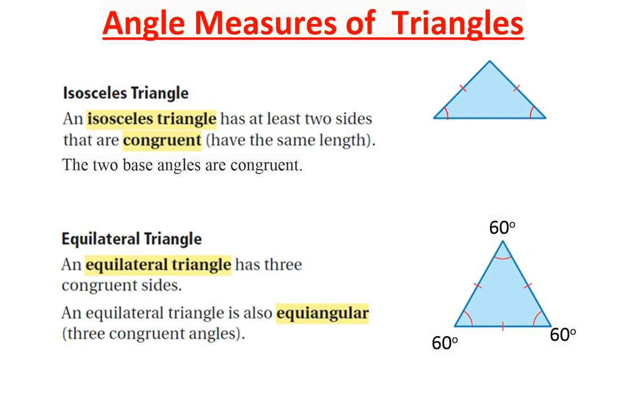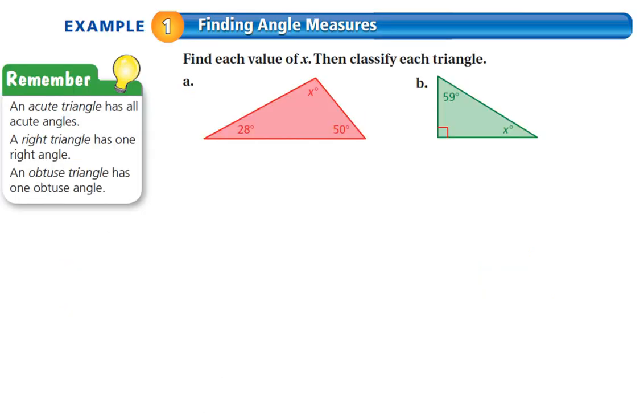Let's get started. In the first two examples here, they ask you to find the measure of the x angle, and they ask you to classify the triangle. So a triangle can be classified as acute, right, or obtuse, depending on the measures inside. If all of the measures are less than 90, then you have an acute triangle. If one of the angles is exactly 90, you have a right triangle. And if one of the angles is greater than 90, you have an obtuse triangle.